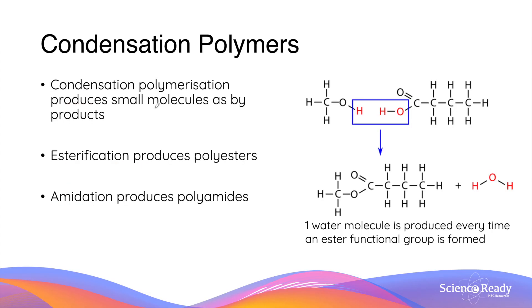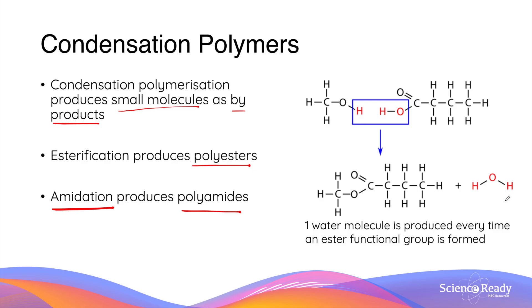Condensation polymerization involves condensation reactions that produce small molecules as byproducts. For example, esterification produces polyesters, which produces a small molecule of water. Amidation produces polyamides and, through the same mechanism, also produces a small molecule of water — hence why both reactions are classified as condensation reactions.